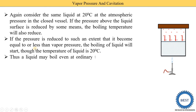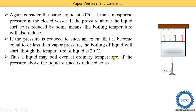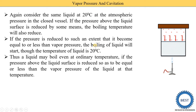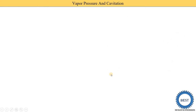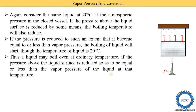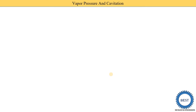Thus liquid may boil even at ordinary temperatures if the pressure over the liquid surface is reduced so as to be equal to or less than the vapor pressure of the liquid at that temperature. It is not necessary that vapor is created only at 100 degrees — we are able to create vapor or steam at 20 degrees Celsius as well.